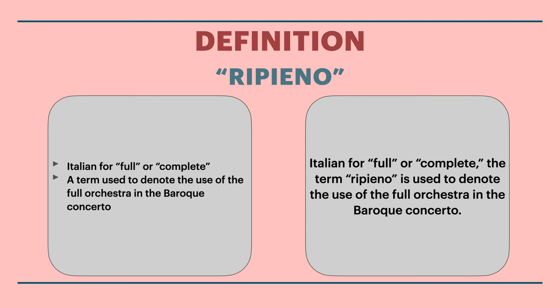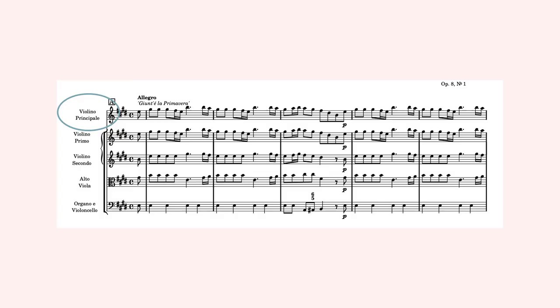Just for your reference, here's a solid definition of ripieno. Italian for full or complete, this term is used to denote the use of the full orchestra in the Baroque concerto. Now, on our slide, we can see that we have solo violins sitting here on the top. Then, first and second violins, viola, and continuo. Notice on the right side of the page, or closer to the center, that we have figured bass circled in dark red.